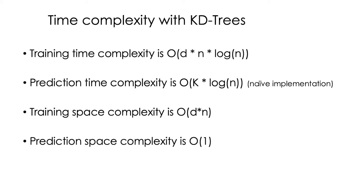So what happens with the time complexity when we use KD-trees? Here we have training time complexity because we actually need to build the tree. And why is it O(D·N·log N)? First we have N log N because of the binary tree — we have one node for each of the training points, and given that we have one node per training point, we have N log N for the cost of binary tree construction. Why do we need to multiply this by D? Because each point is basically repeated for each of the dimensions, since we are rotating the dimensions for every data point.